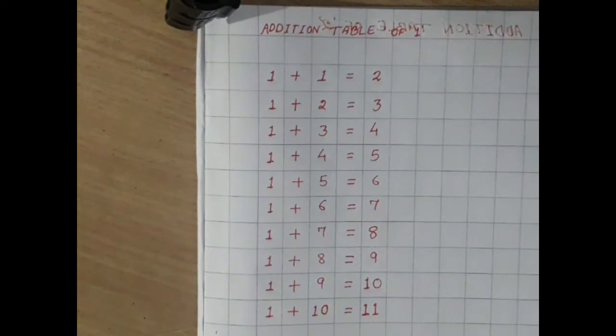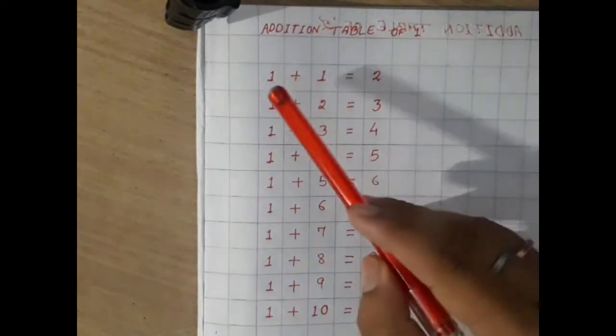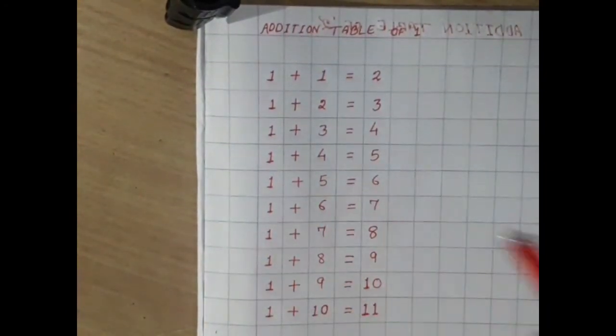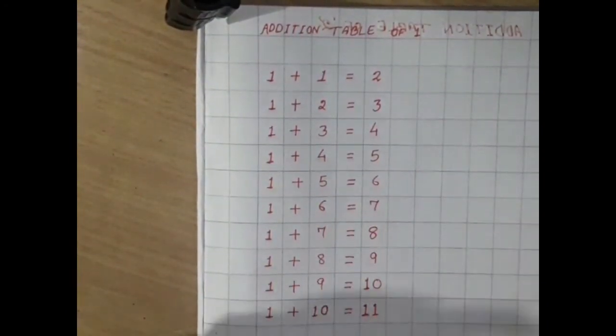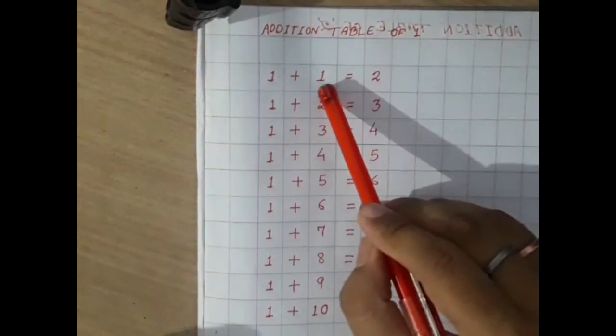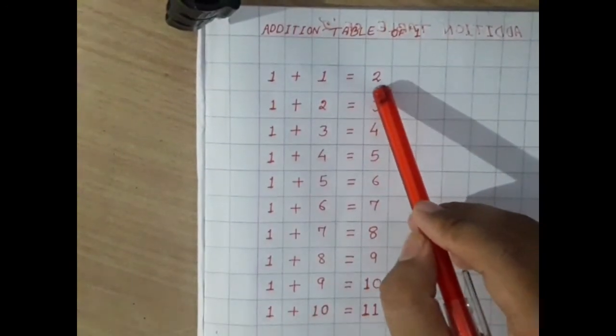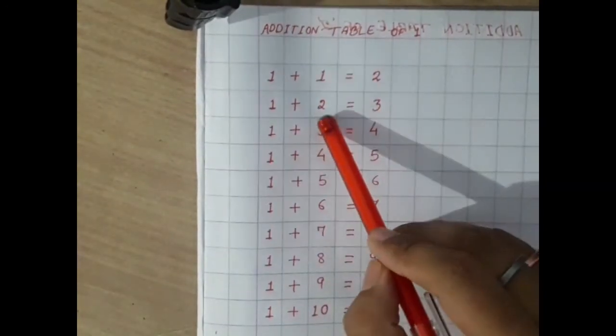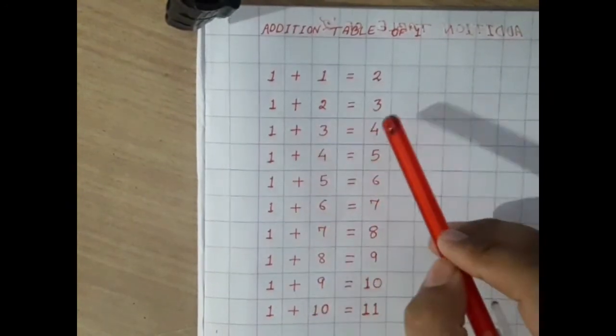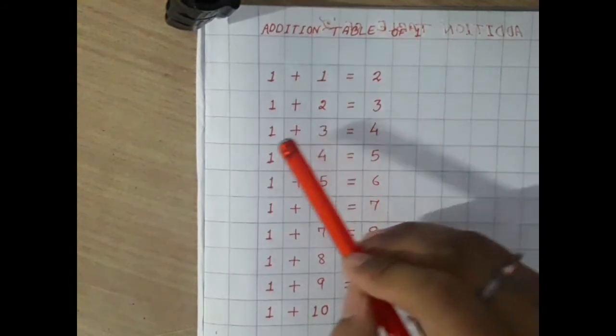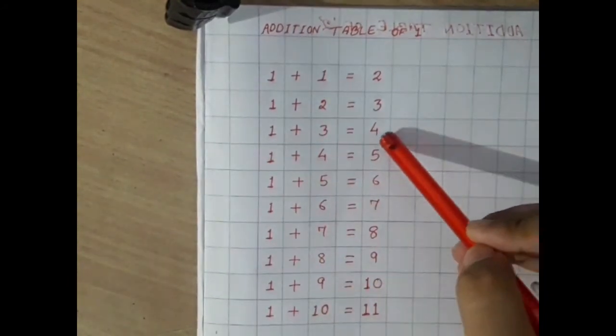Now see, if we add any number with 1 then we get different answers. Like if we add 1 with 1 we get 2. If we add 2 with 1 then we get 3. If we add 3 with 1 then we get 4.